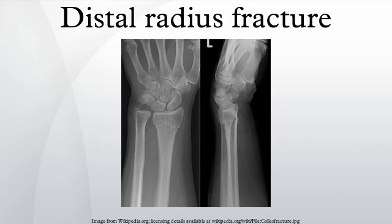X-ray of the affected wrist is required if a fracture is suspected. CT scan is often performed to investigate the articular anatomy of the fracture, especially if surgery is considered. Investigation includes assessment of the angle of the joint surface on lateral X-ray, the loss of length of the radius from the collapse of the fracture, and congruency of the distal radio-ulnar joint. Displacement of the articular surface is the most important factor affecting prognosis and treatment.